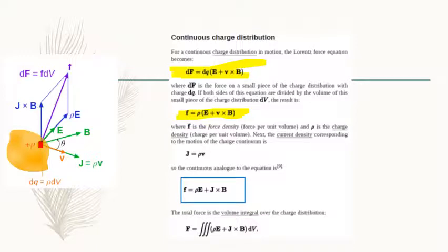We have used small f in terms of dF, termed as force density — force per unit volume. On the right-hand side, in place of dq we are using rho, which is called charge density. The current density corresponding to the motion of the particle is J equals rho·V. So F equals rho·E plus J cross B. The total force on the volume integral can be written accordingly, and by using this we can calculate the continuous distribution.